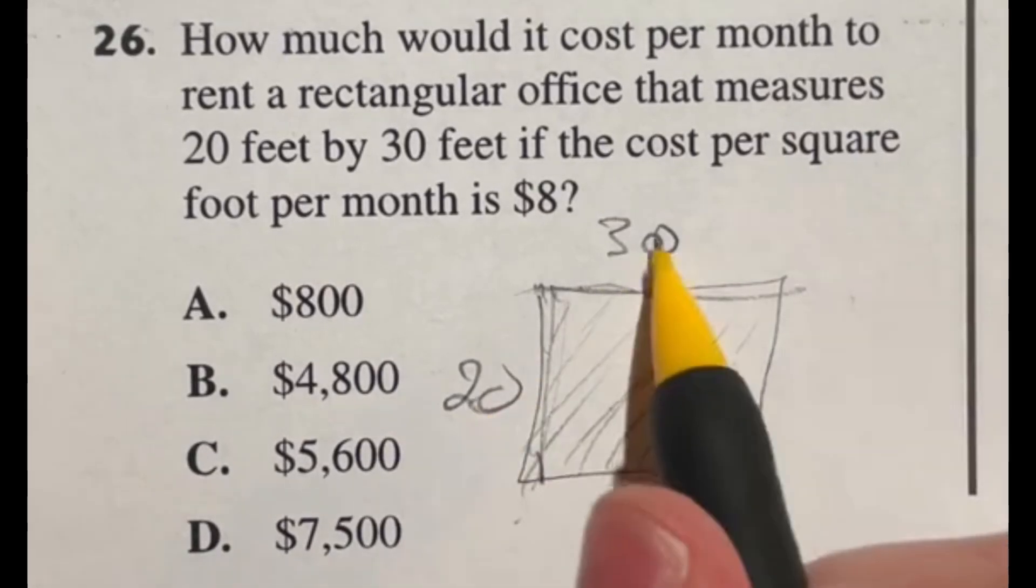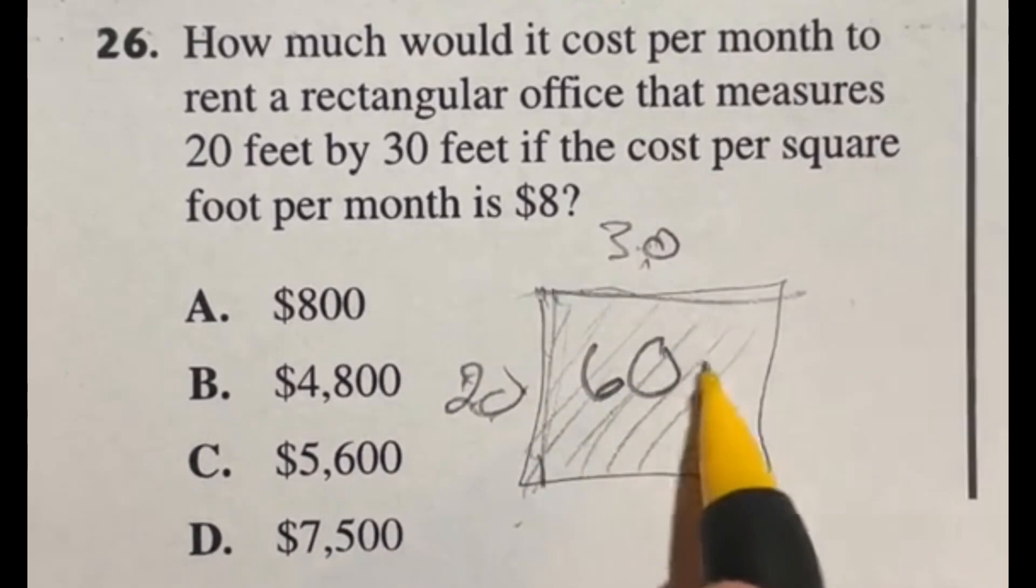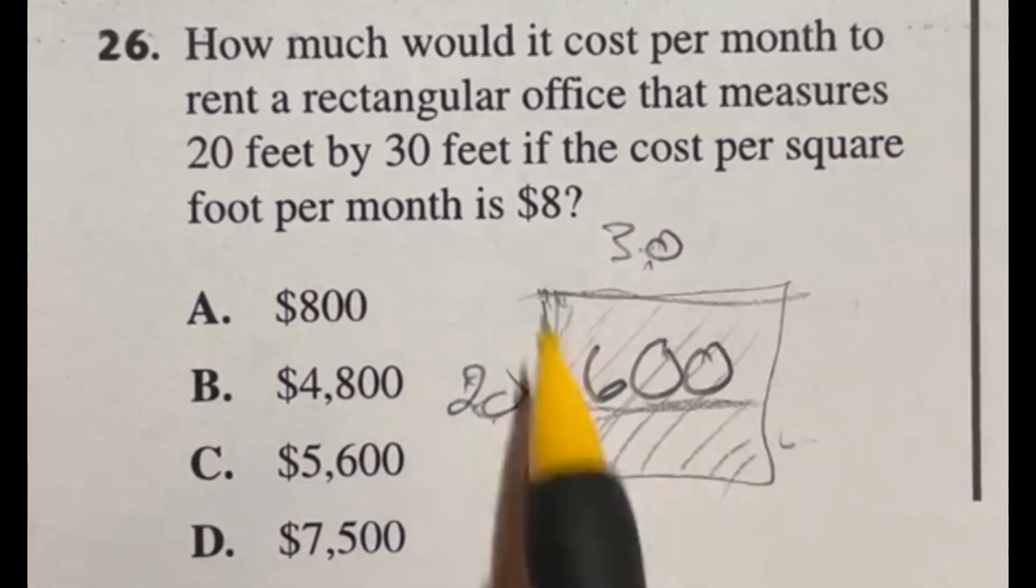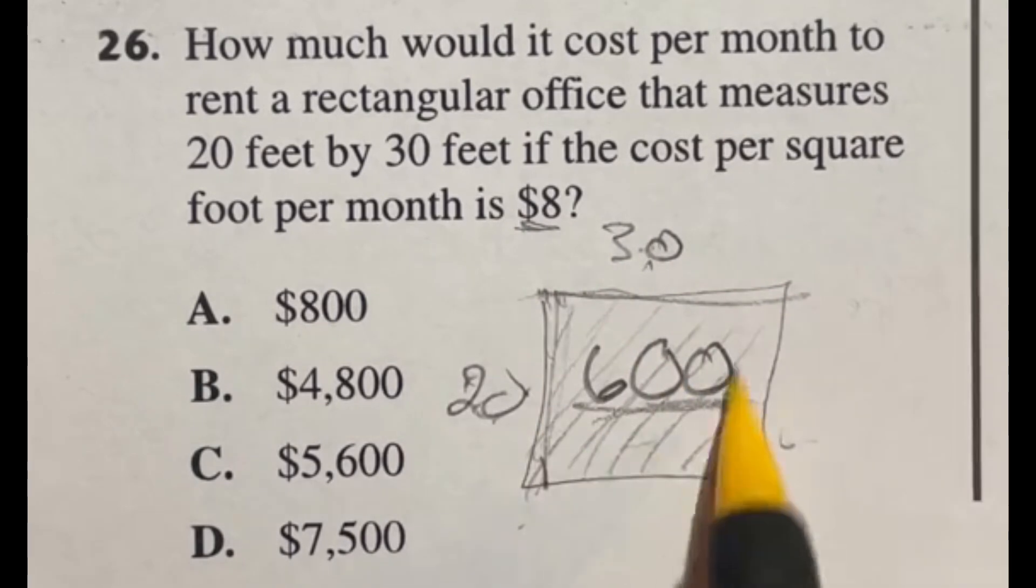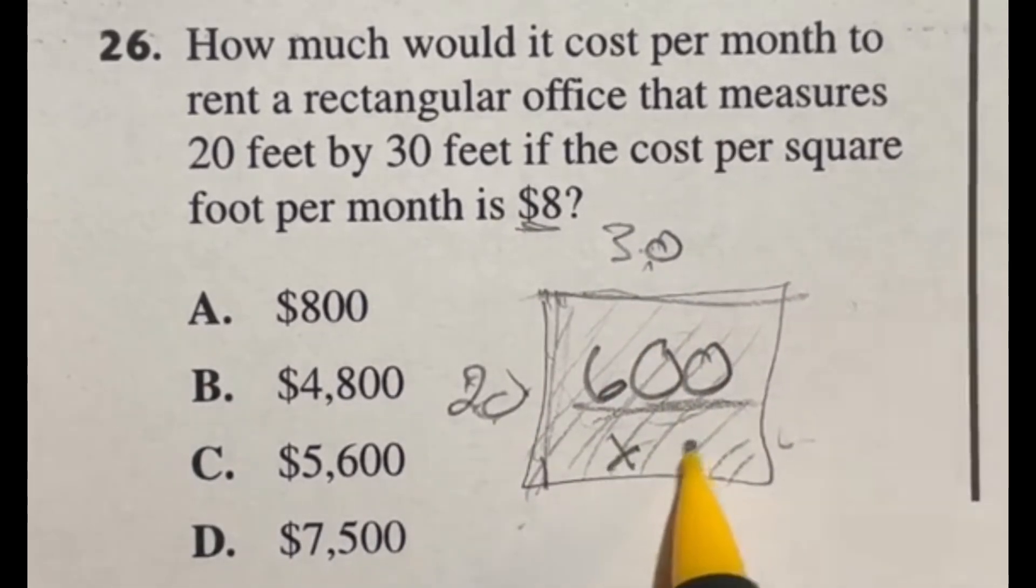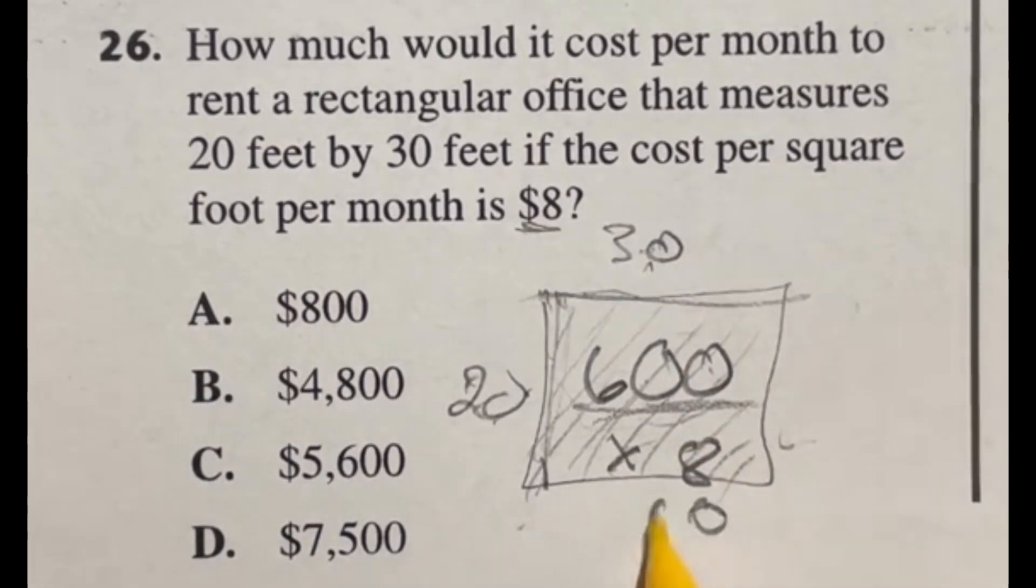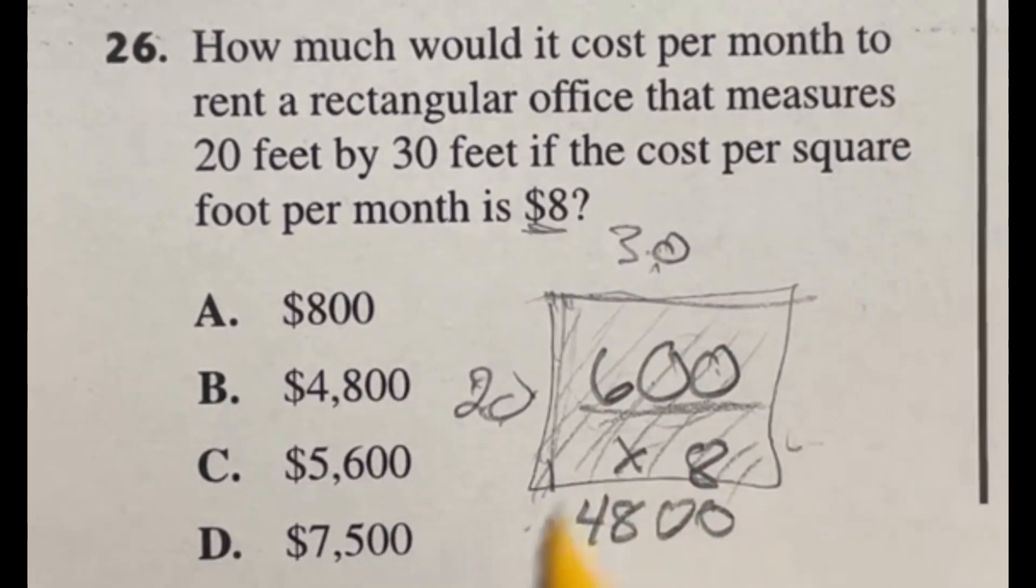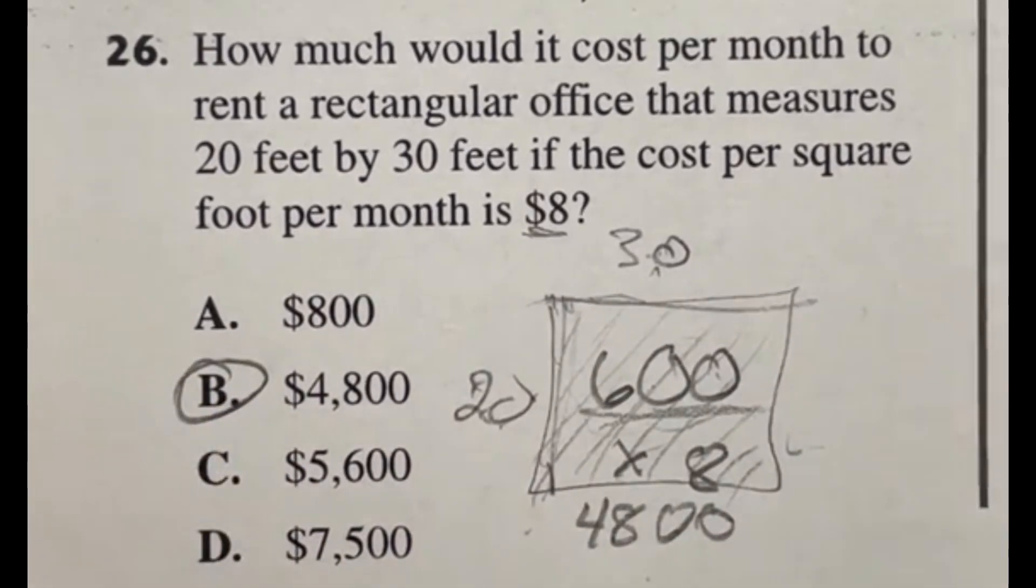If we're finding area of a rectangle you do length times width. So we're doing 20 times 30. 2 times 3 is 6, then we have two zeros for 600. So the area is 600 square feet. We know it's $8 per square foot, so we have to multiply that by 8. 8 times 0 is 0, another 0, and 8 times 6 is 48. So we got 4,800. This is the total cost per month of this space. That's answer B, $4,800.